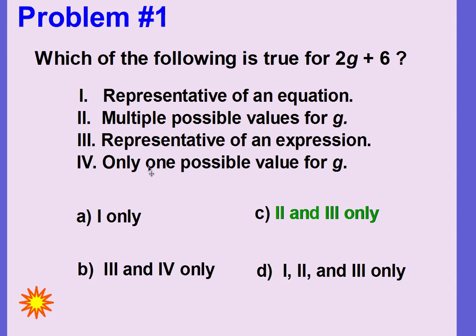And number four says there's only one possible value for g. That's not true either. Because we don't know what this expression is supposed to equal, we could substitute really any value for g. So this one can have multiple values for g. If it were an equation, there would only be one value for g.